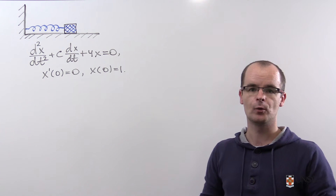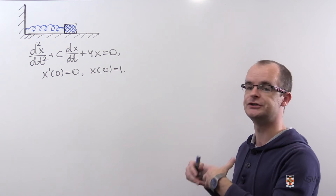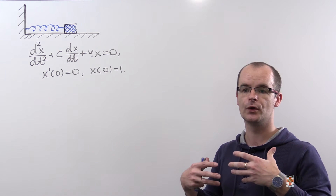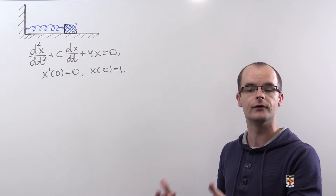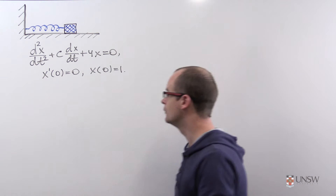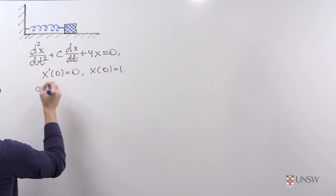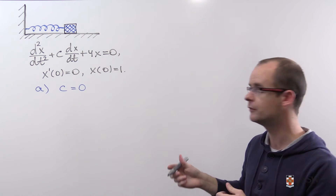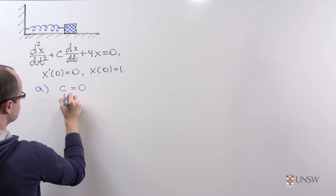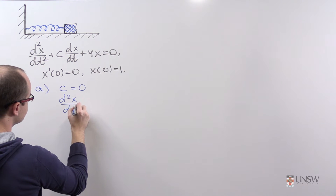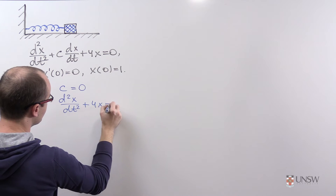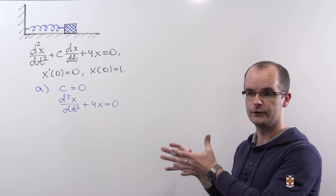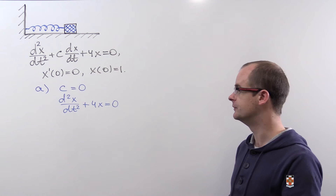In part a of this problem, we are asked to solve this initial value problem in the ideal situation when there is no friction, which means that the coefficient of friction c is 0. In part a, we consider this ideal situation, giving us a homogeneous second-order differential equation with no right-hand side.